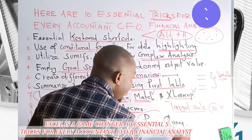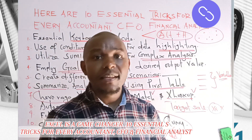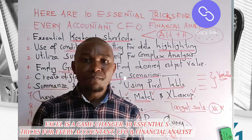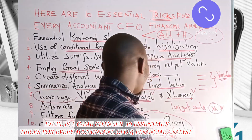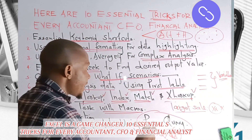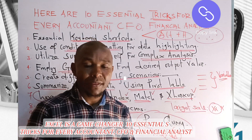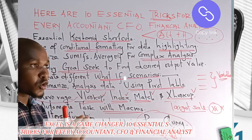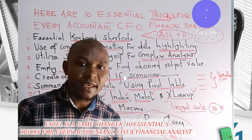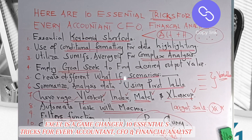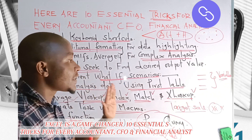Trick number ten is Power Query, which we use to clean data. Once you extract data from your accounting software, it is not clean or in the format you need. For example, when reconciling a bank statement, you may find that the date column is combined with the time. We use Power Query to separate the time into one column and the date into another, so you can perform analysis with clean data.